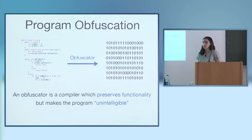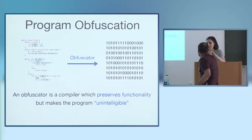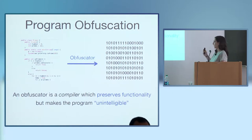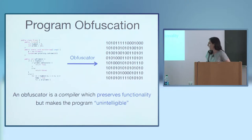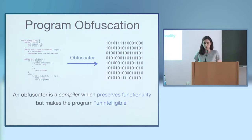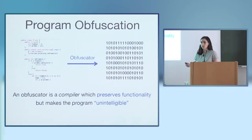Over the last few years, obfuscation has become one of the most exciting research areas in modern cryptography. At a high level, an obfuscator is a compiler which takes some program and transforms it into another program in such a way that it should preserve the functionality of the original program, so you should be able to use both in the same way. But also, ideally, we'd like the obfuscated program to not reveal anything about the original program.